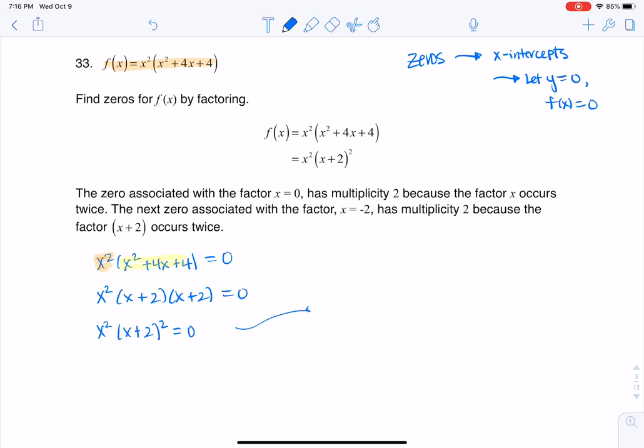So from the zero product property, I have that either x squared is equal to zero or x plus 2 squared is equal to zero. And really that gives us that x is equal to zero or x plus 2 is equal to zero. And if I solve this just a little bit more, I'm going to get x is equal to negative 2.